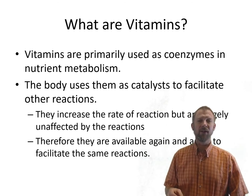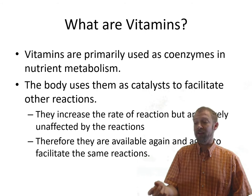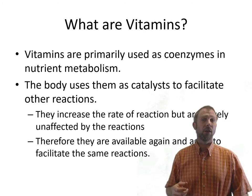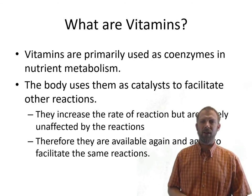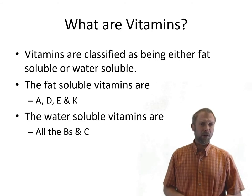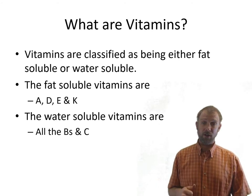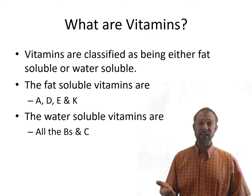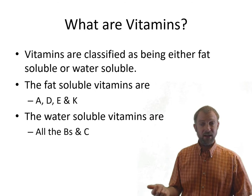Vitamins don't actually become part of the animal's structure the way calcium becomes part of bone or amino acids become part of muscle. This is an important concept to understand. Vitamins are classified into either fat-soluble or water-soluble. The four fat-soluble vitamins are A, D, E, and K. The water-soluble vitamins are all the B vitamins and C.